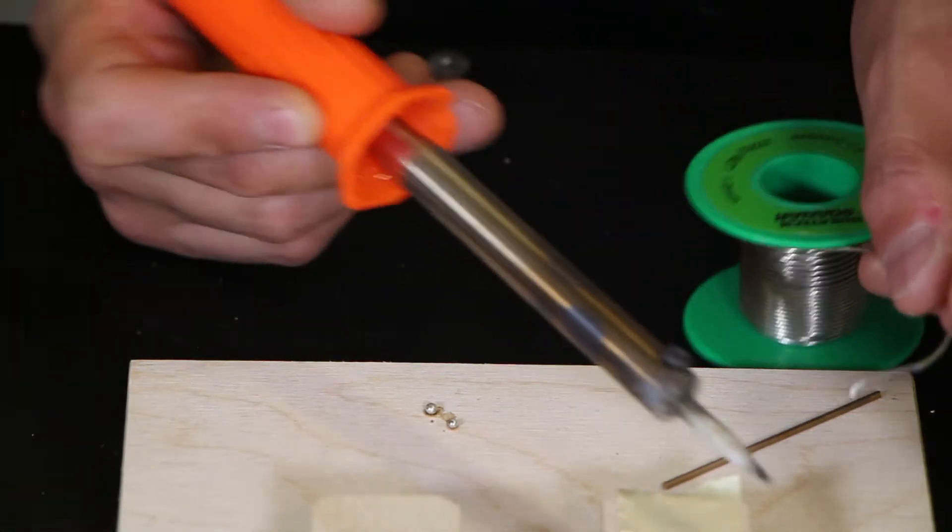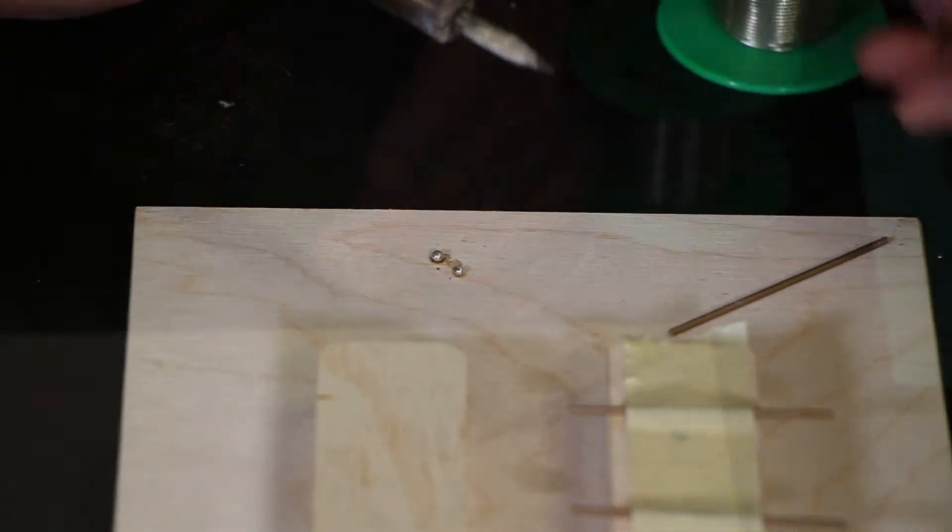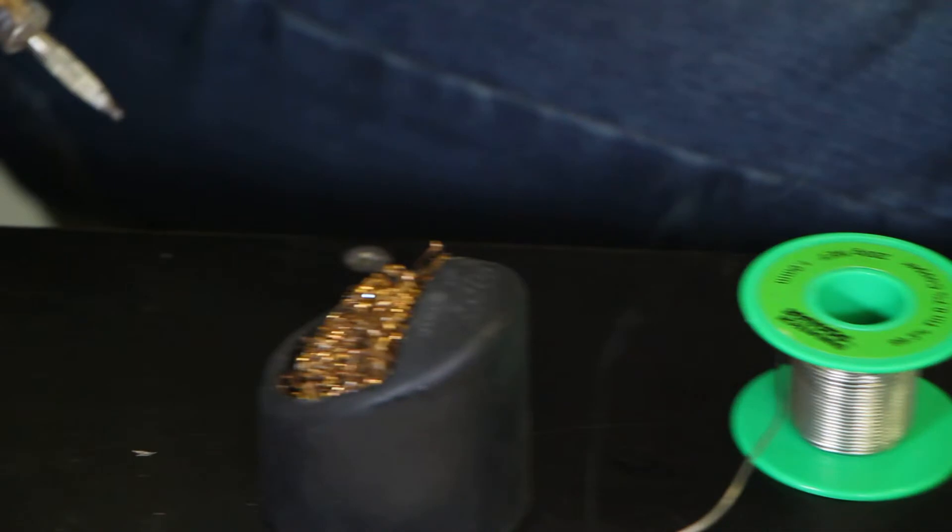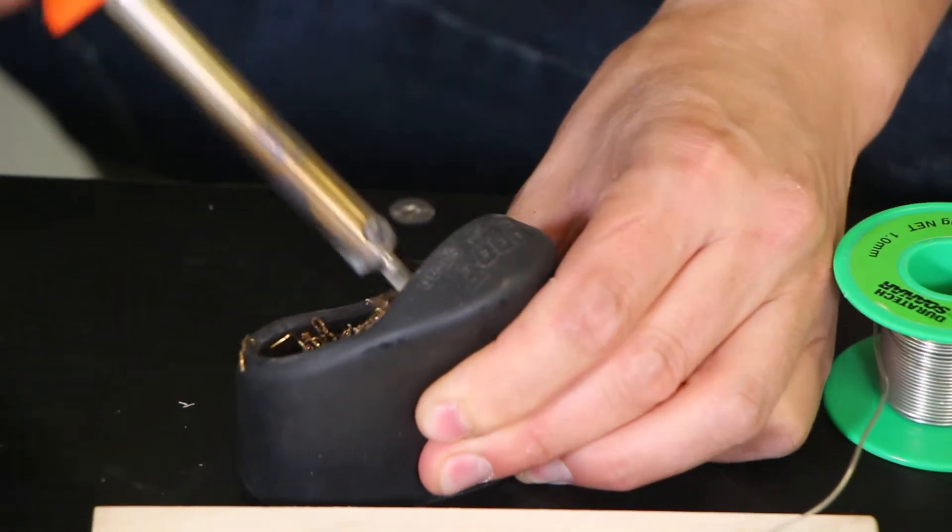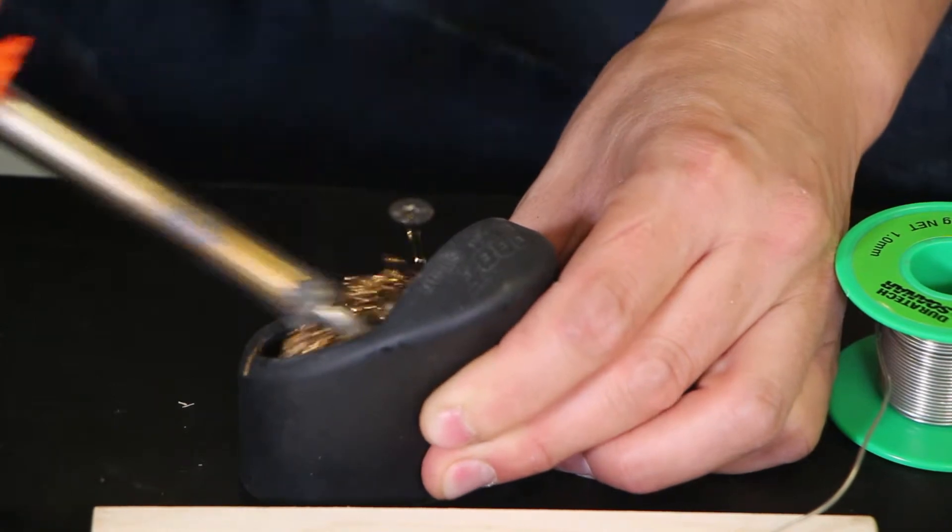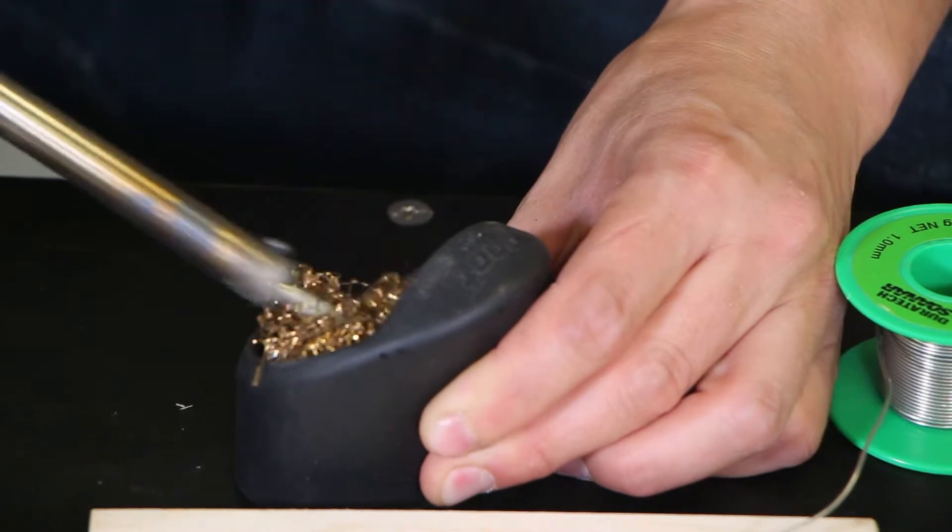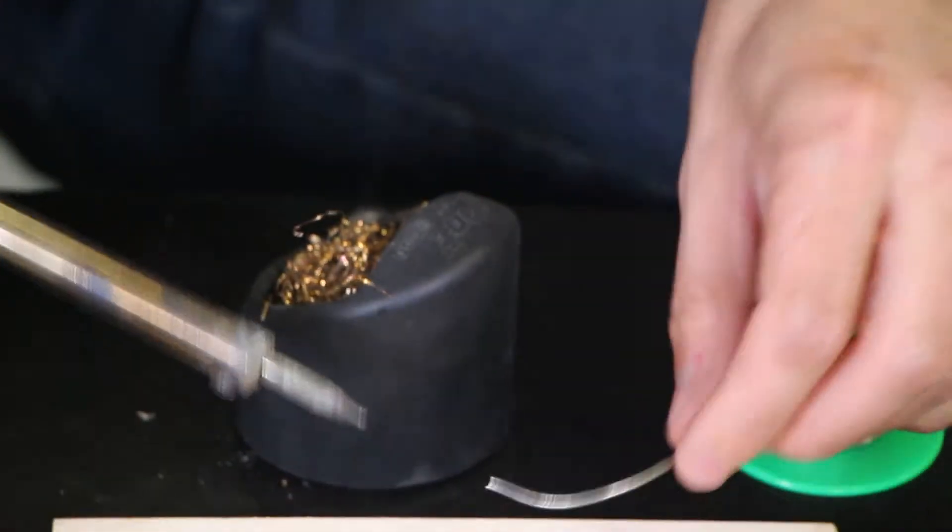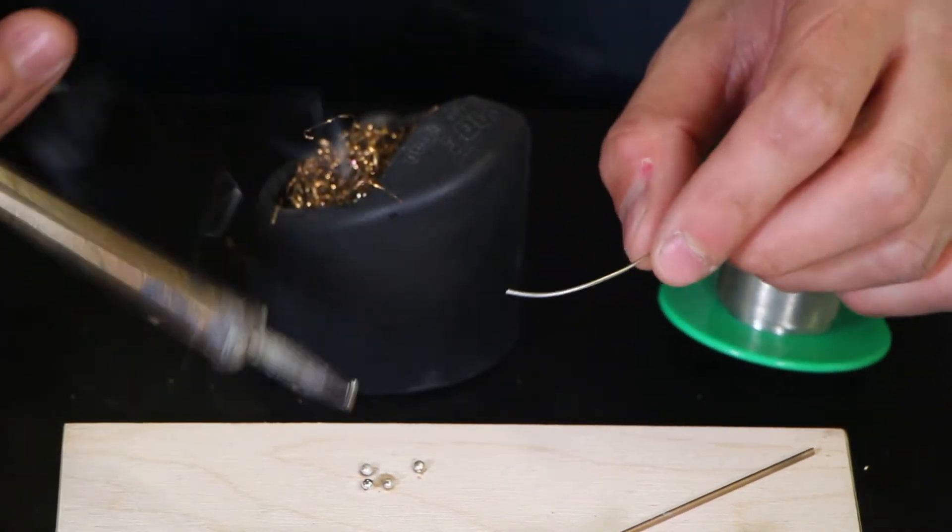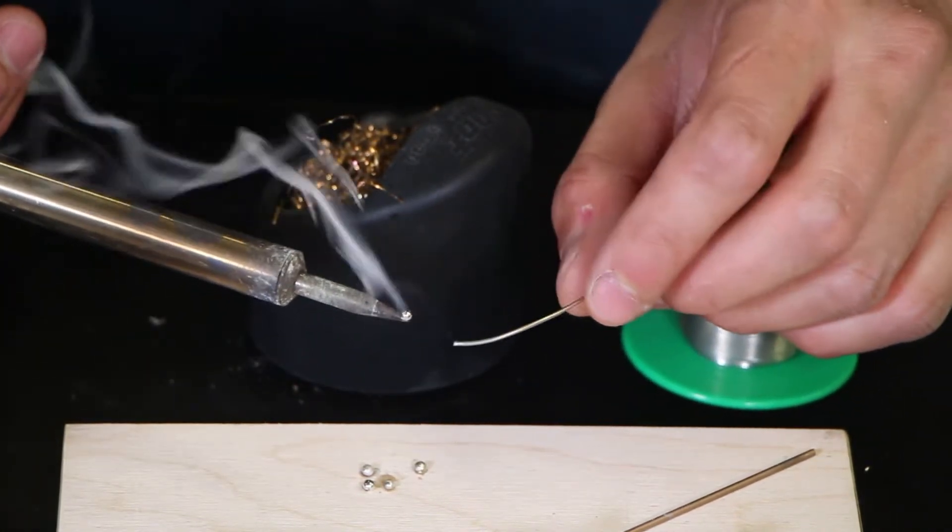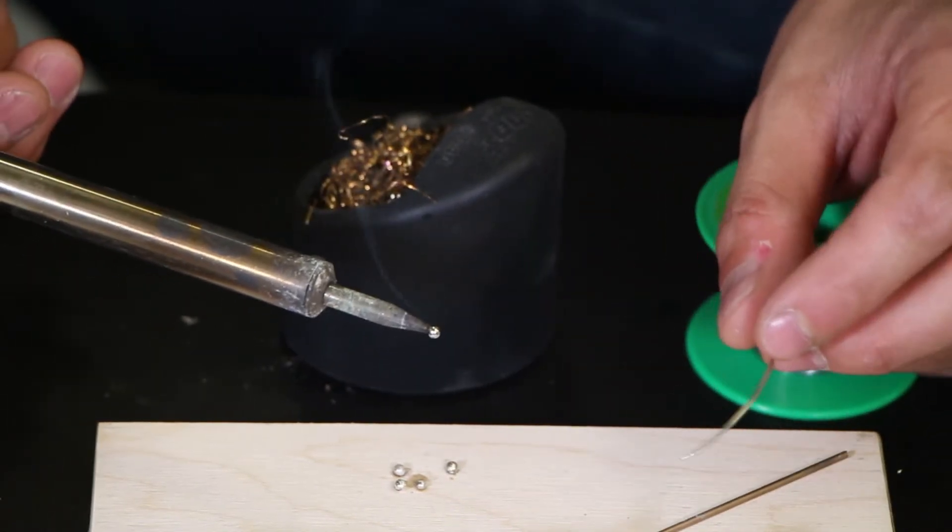We want the solder to be sticking to the soldering iron so that we can form that heat bridge and get the heat into our work. So I'm going to try some of this steel wool inside this convenient holder, got my safety squints on. Going to rotate the soldering iron and try and abrade all the different sides of the soldering iron.